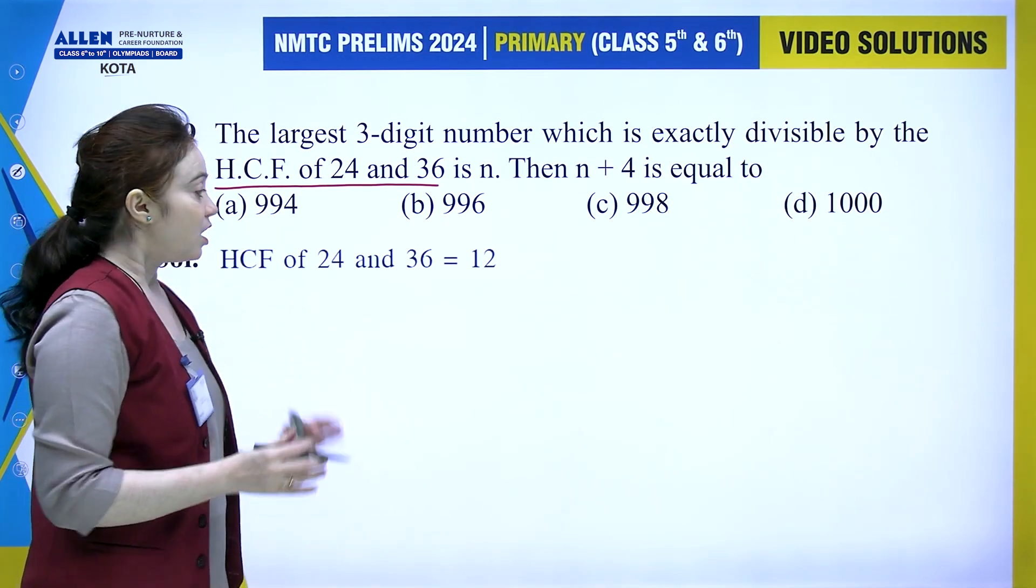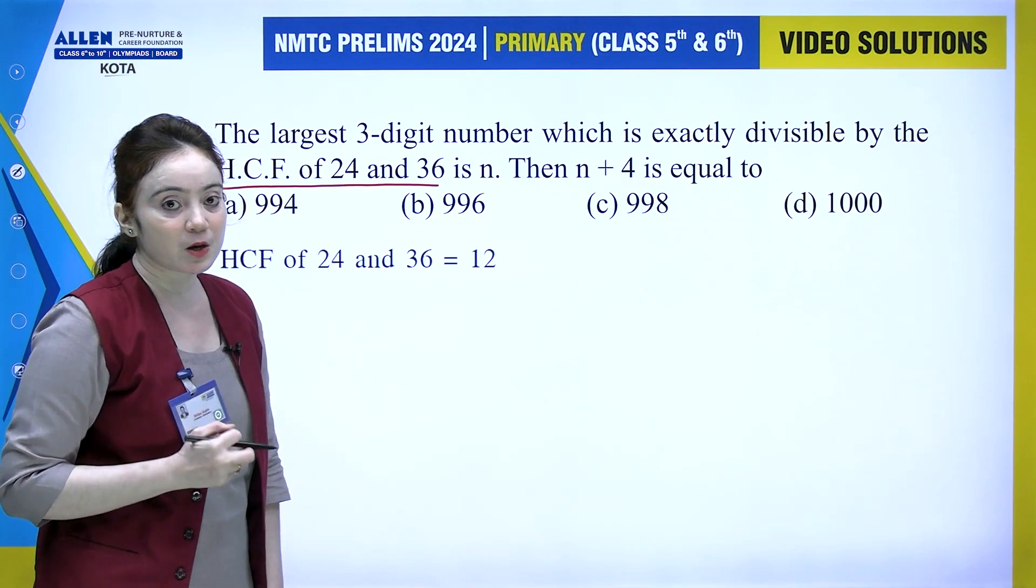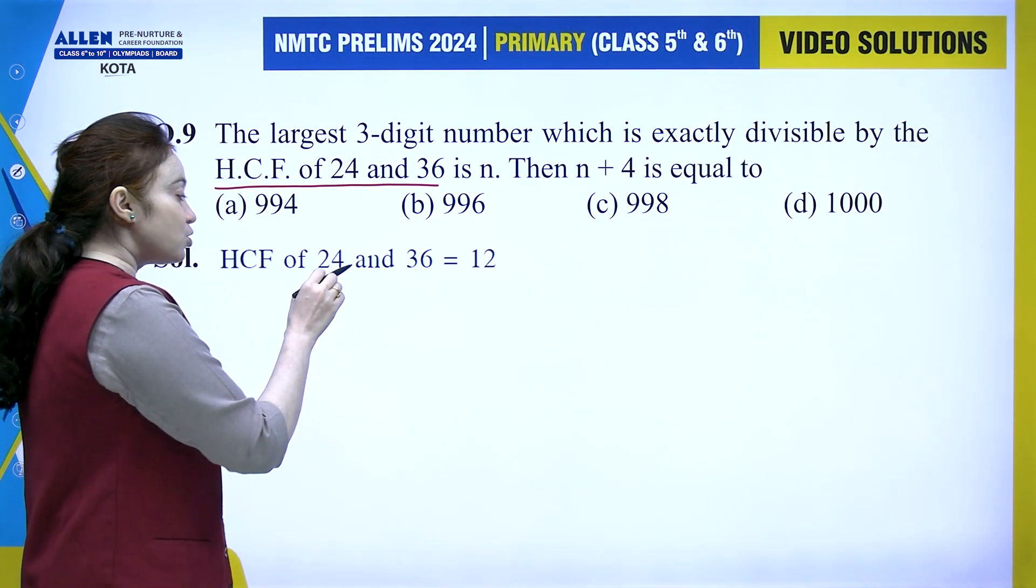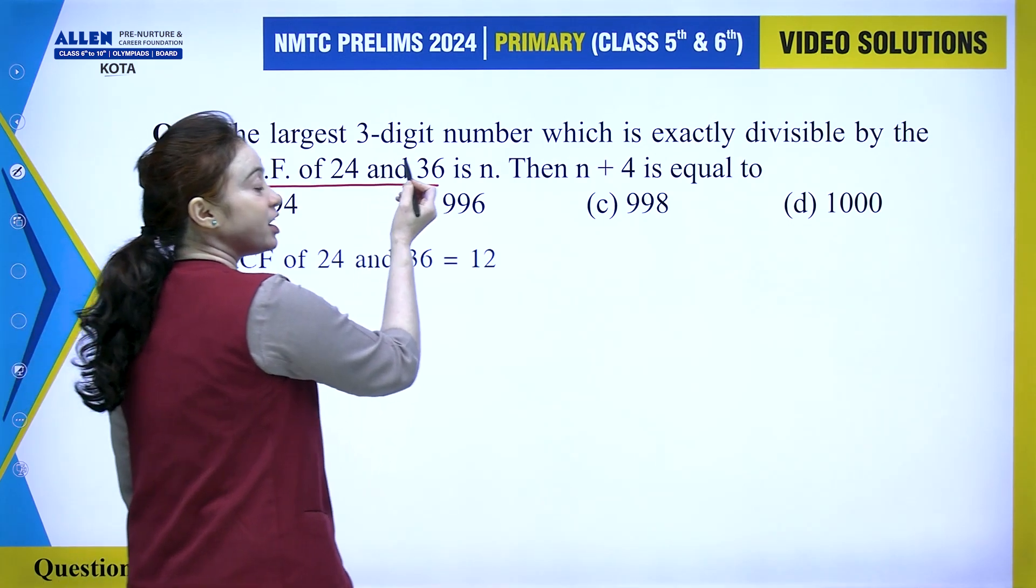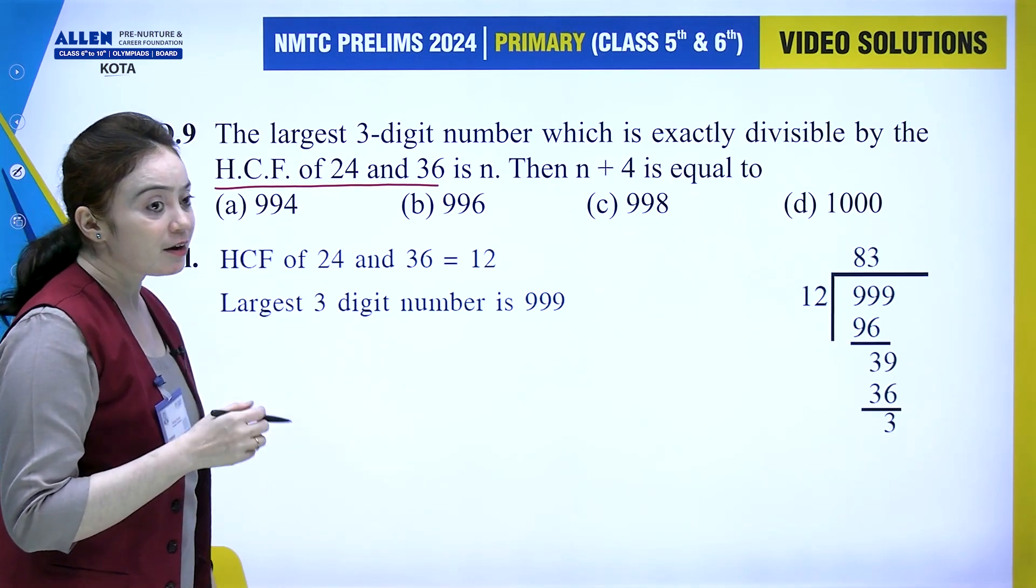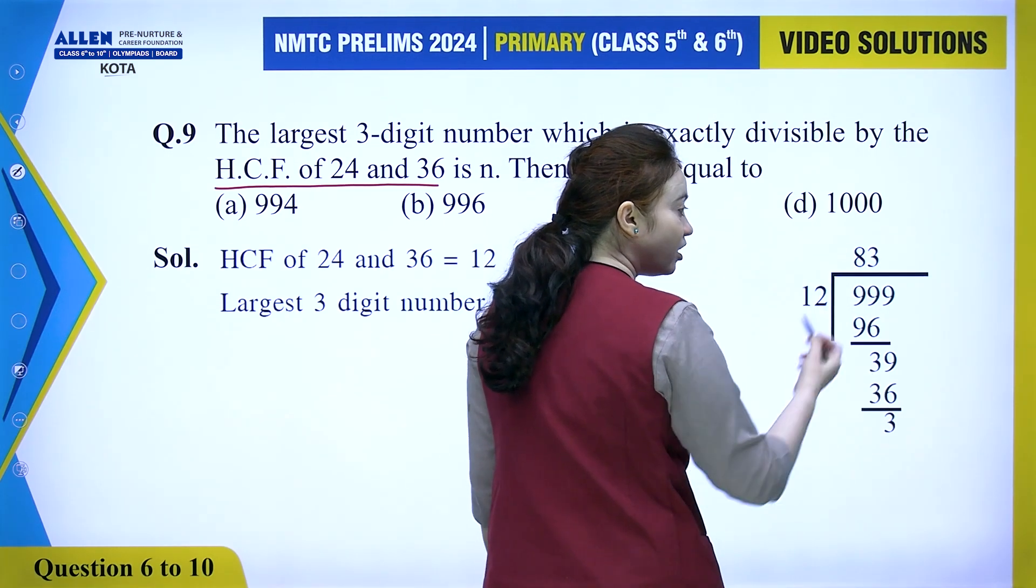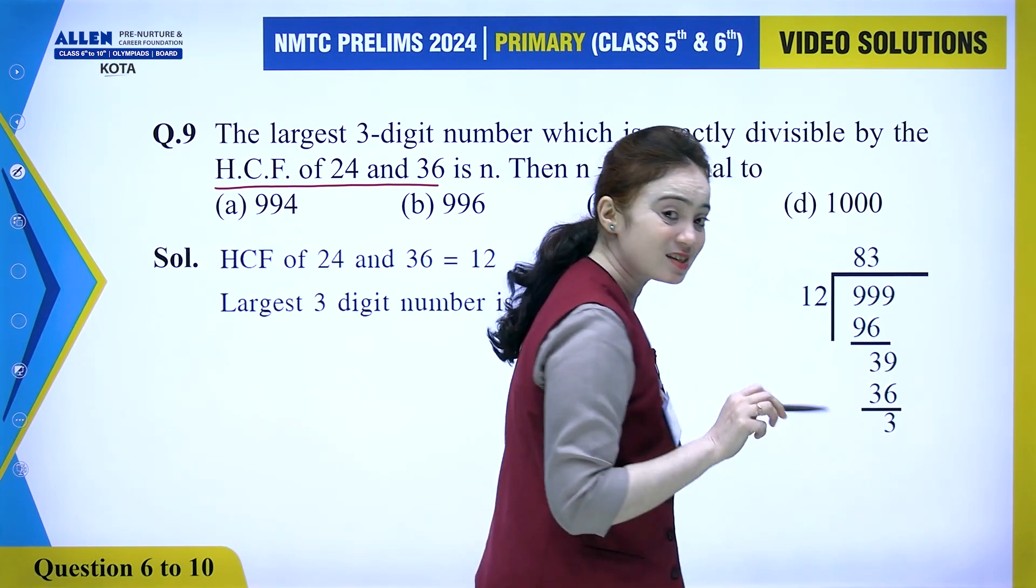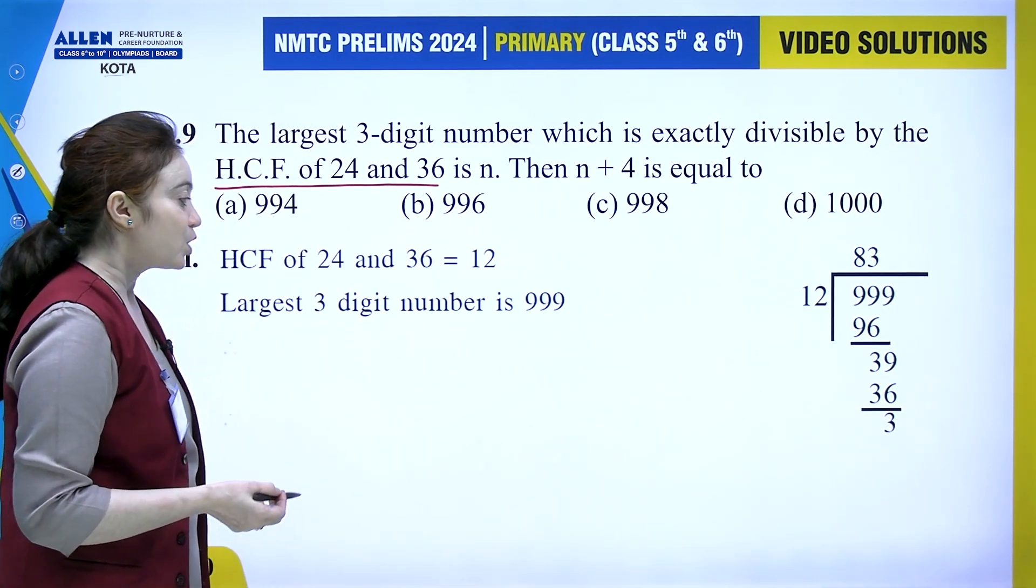24 can be written as 12 into 2, and 36 can be written as 12 into 3. The HCF is 12. Now we need to find n, which is the largest three-digit number exactly divisible by 12. The largest three-digit number is 999. If we divide 999 by 12, we get remainder 3. To make it exactly divisible, we subtract 3 from 999, so n equals 996.